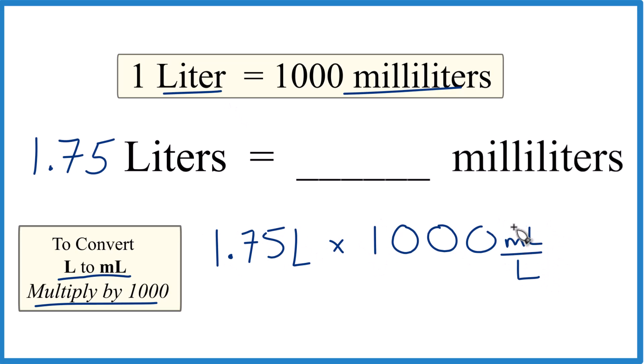Now, when we multiply liters on top and the bottom, they cancel out. We're left with milliliters. That's what we're looking for.